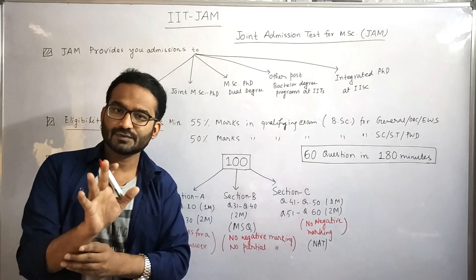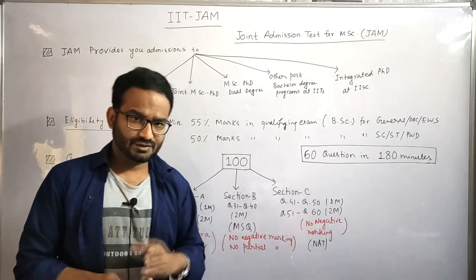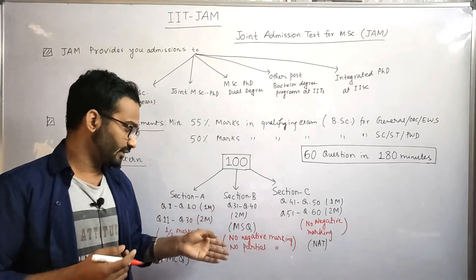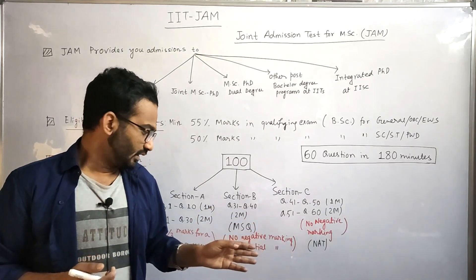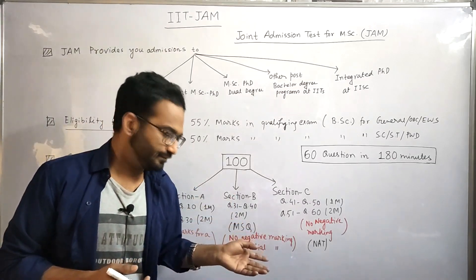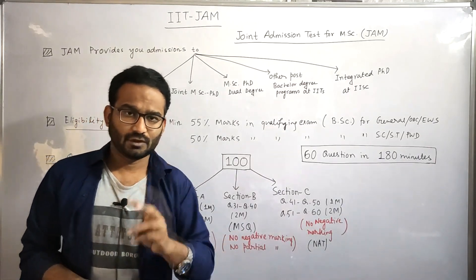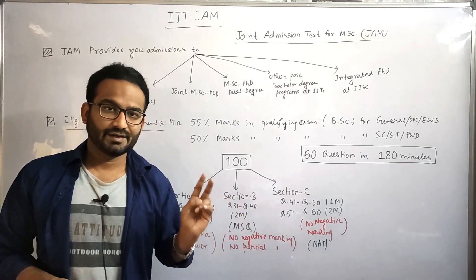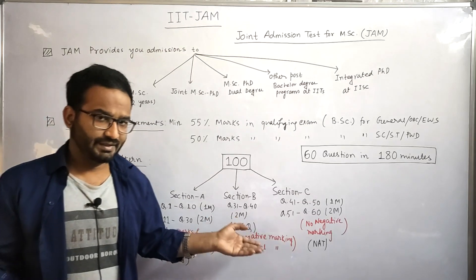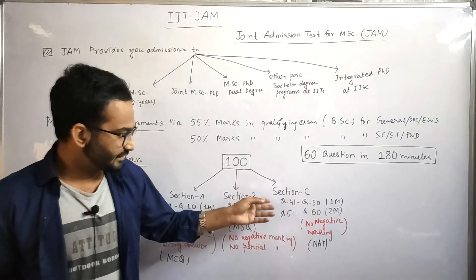For Section B, there are 10 questions — question numbers 31 to 40 — and all questions are of two marks each. The nature of these questions is Multiple Select Questions (MSQ), meaning more than one option may be correct. There is no negative marking and no partial marking in this section. If you answer incorrectly you get no negative mark, and if you select fewer correct options than required, you get zero marks.